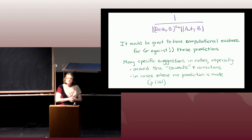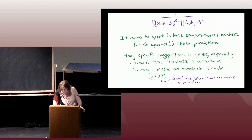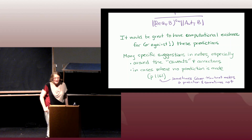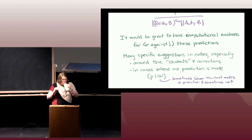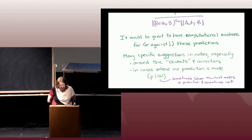When p divides the order of G, things are more subtle. Sometimes the Cohen-Martinet paper makes a prediction and sometimes not, depending on p and G. Also in the notes, I give several examples of cases — pretty low-degree fields — for which no prediction is made at all by anyone. It would be very exciting to see more computational evidence for the distribution of class groups in these cases.